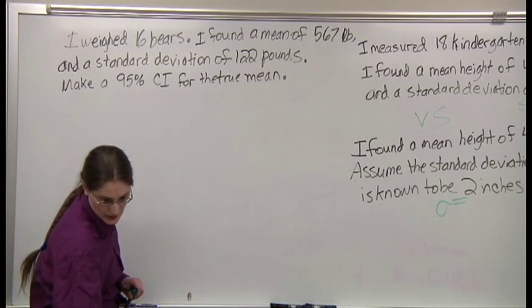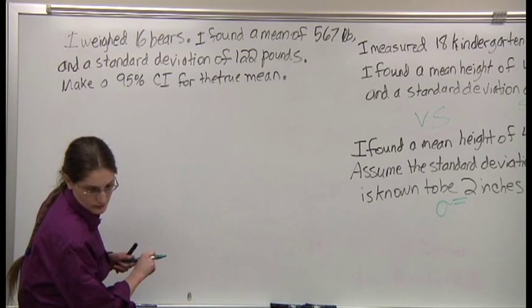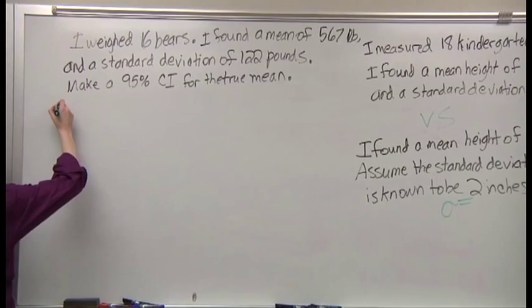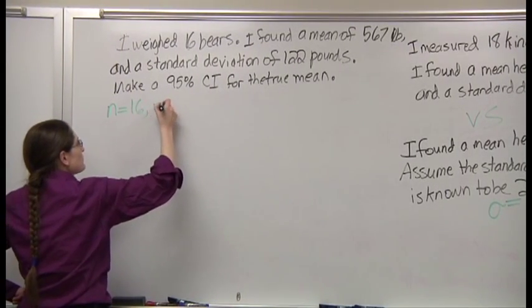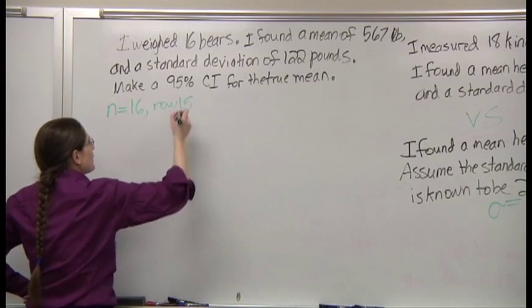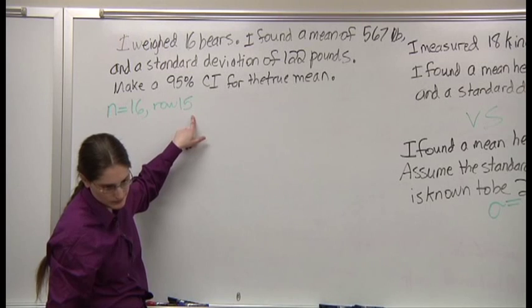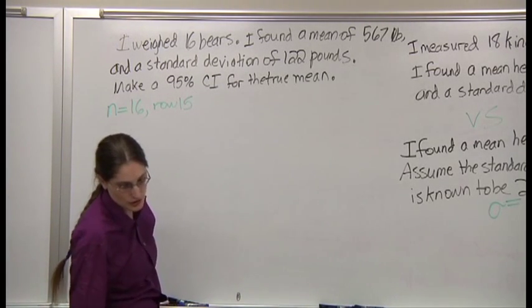First step, get out your T table. N equals 16, so you're in row 15. 95% confidence interval.